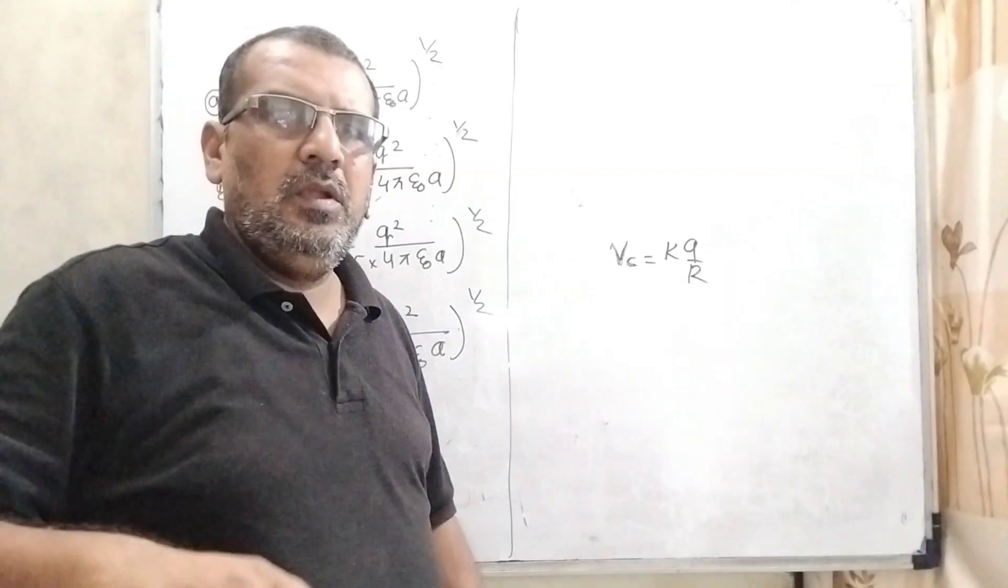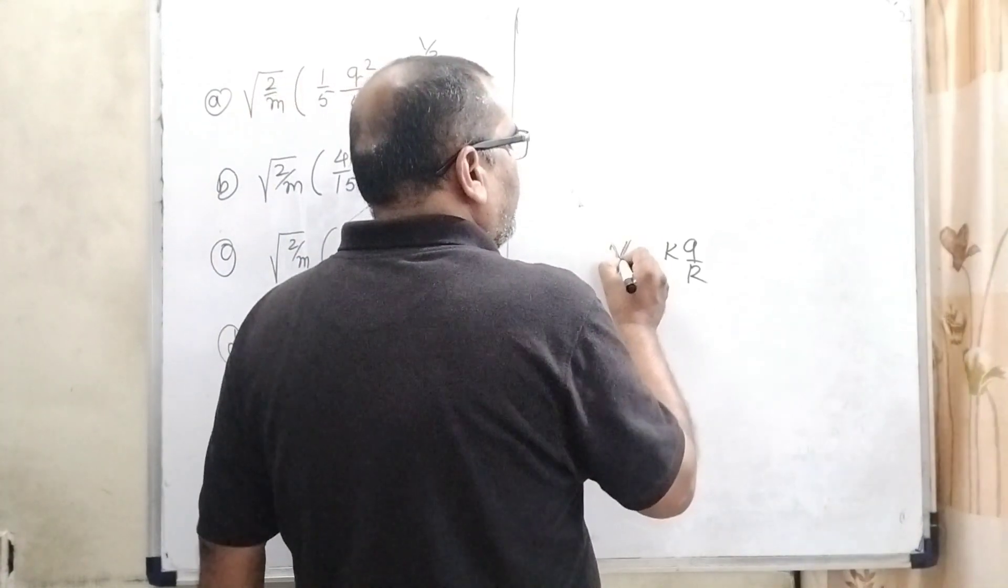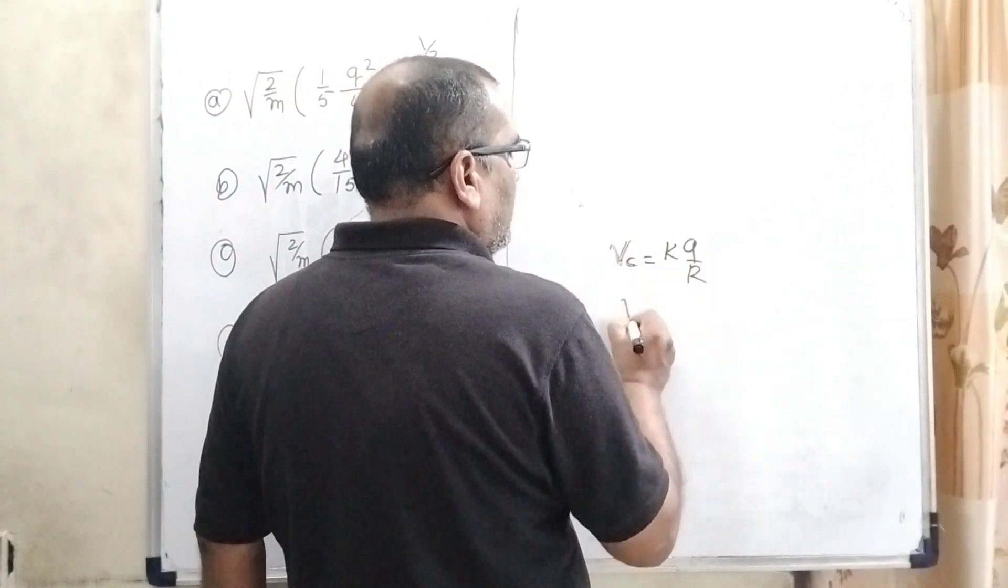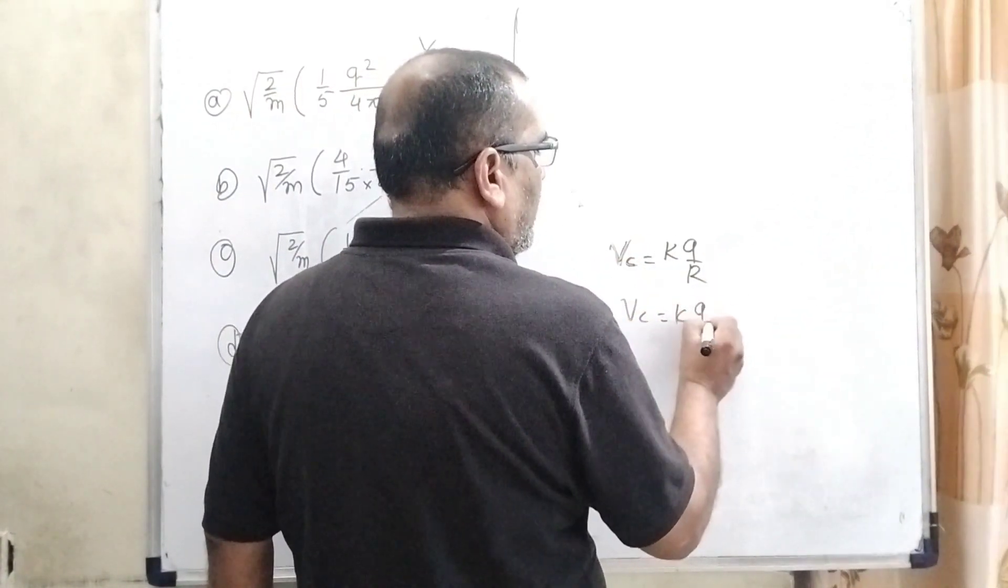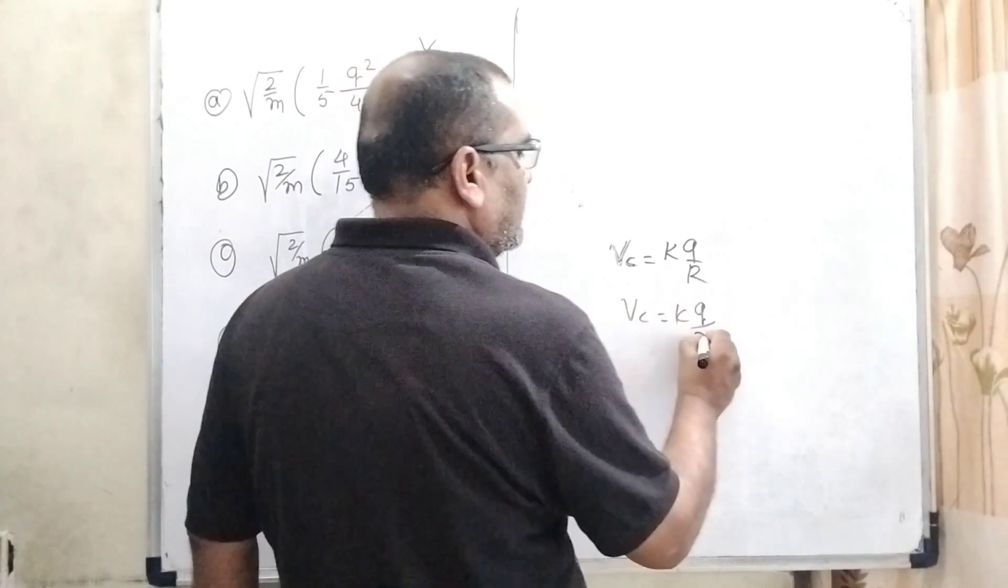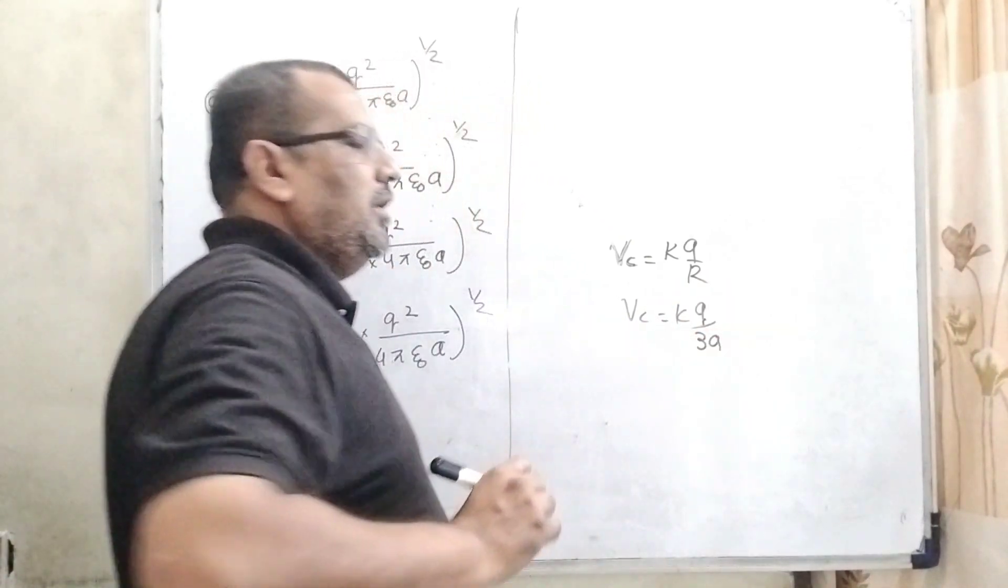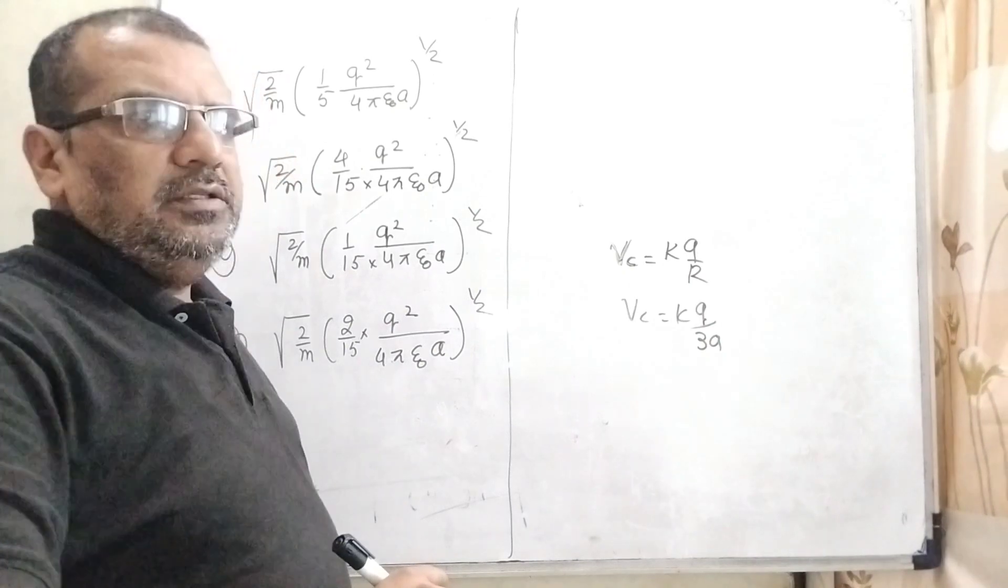Now, potential difference at center Vc equals kq by r. That is Vc equals kq, and here the r at the center is 3a. So here Vc equal to kq by 3a.